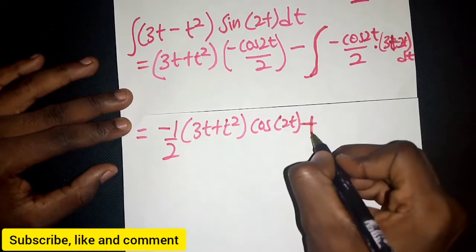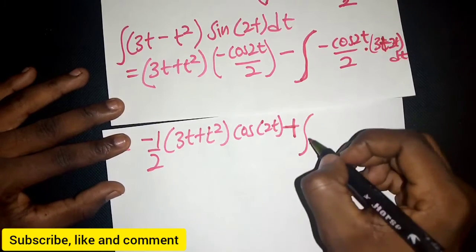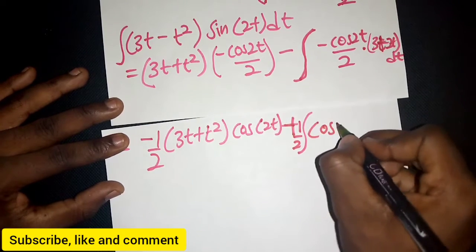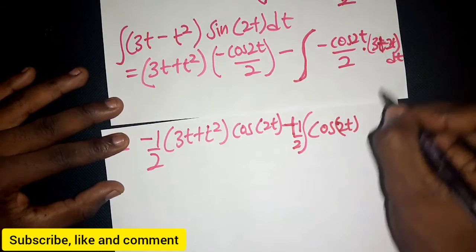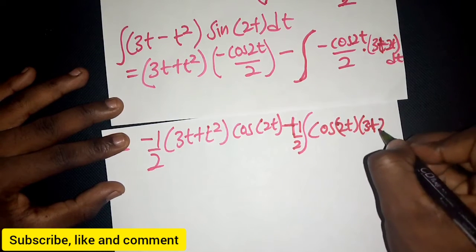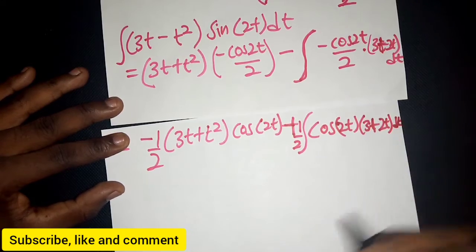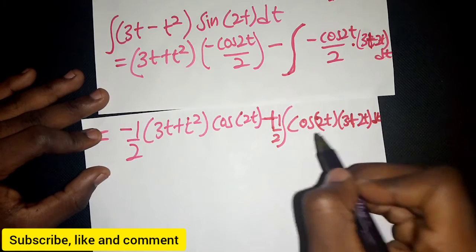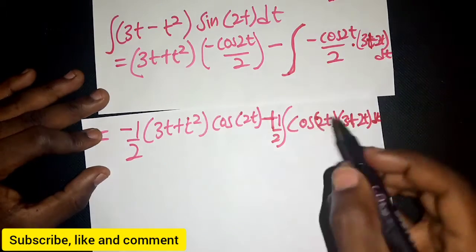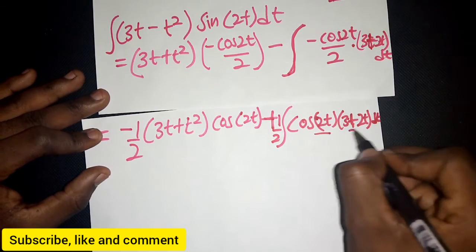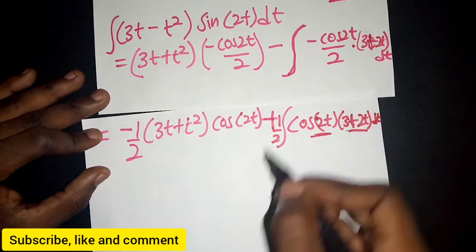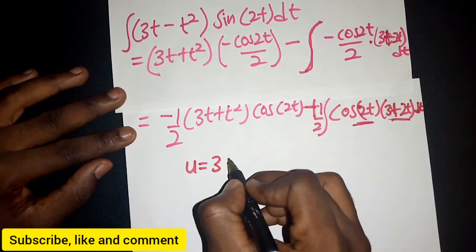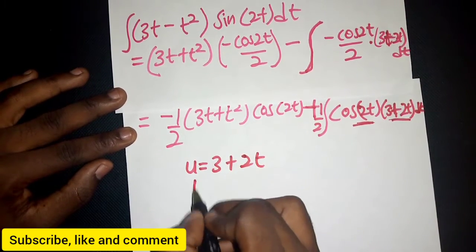We have minus-minus which becomes positive. We can factor out ½, leaving the integral of cos(2t)·(3 + 2t) dt. We need to apply integration by parts again because we still have two functions multiplying each other.